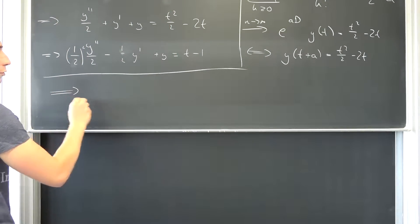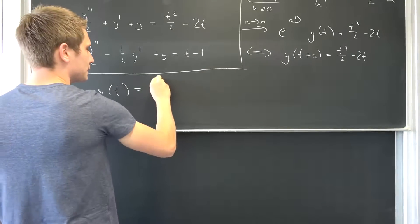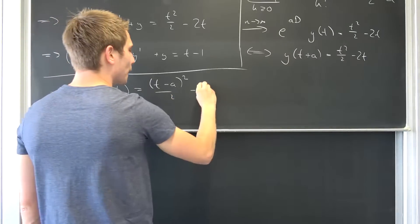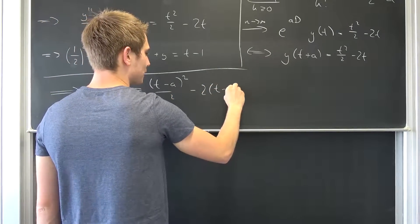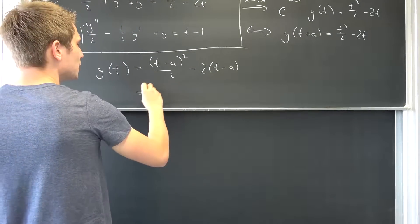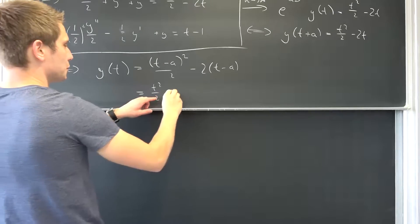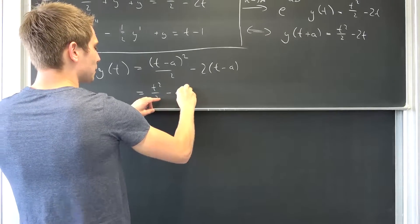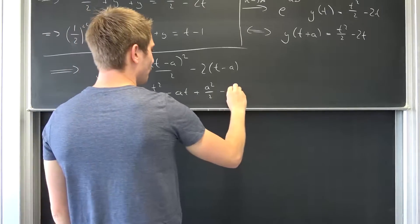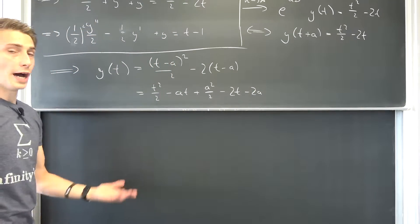Meaning overall that implies that y of t is t minus a squared over two minus two times t minus a. We can write all of this out leaving us with, we are going to get t squared over two minus a times t plus a squared over two minus two times t minus two times a.